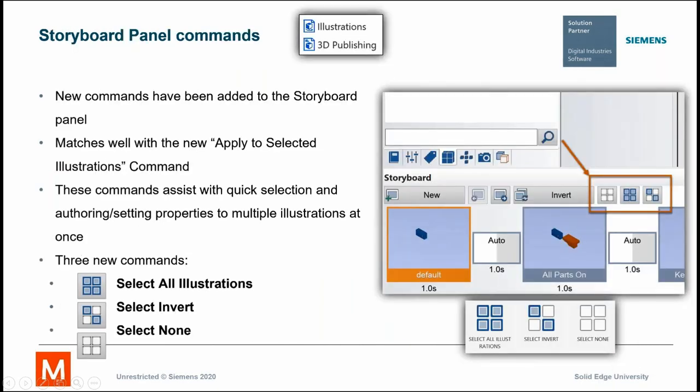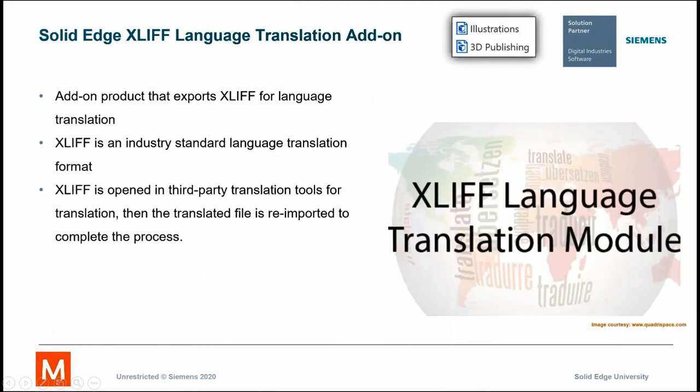There are some storyboard panel commands — new commands right at the storyboard so you don't have to go hunting around for icons. This gives you the opportunity to quickly select all the illustrations or do an invert. So if anything is selected, you can reverse that and select everything else, or clear it to select none of them, without needing to move the mouse around very much.